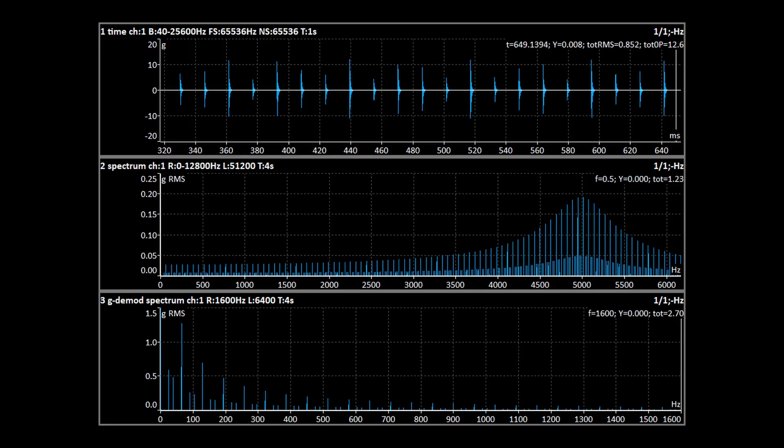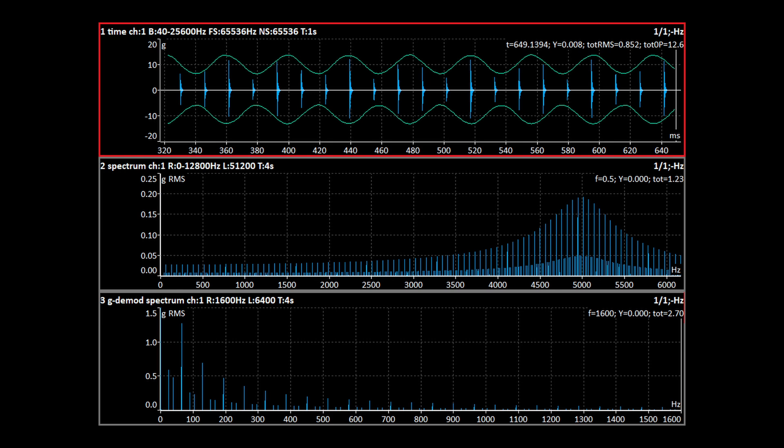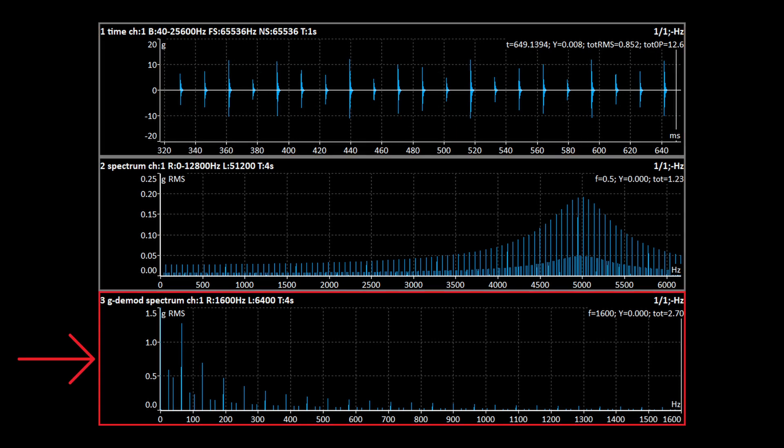Let's look at a measurement of a bearing with only one fault on the outer race. The time signal clearly shows the amplitude of the shocks is variable. It is modulated by the speed frequency of the rotating shaft. The demodulated spectrum shows the BPFO and its harmonics. Modulation is shown as sidebands near these frequencies.